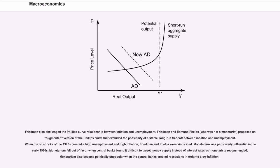Friedman also challenged the Phillips curve relationship between inflation and unemployment. Friedman and Edmund Phelps, who was not a monetarist, proposed an augmented version of the Phillips curve that excluded the possibility of a stable, long-run trade-off between inflation and unemployment. When the oil shocks of the 1970s created high unemployment and high inflation, Friedman and Phelps were vindicated. Monetarism was particularly influential in the early 1980s.